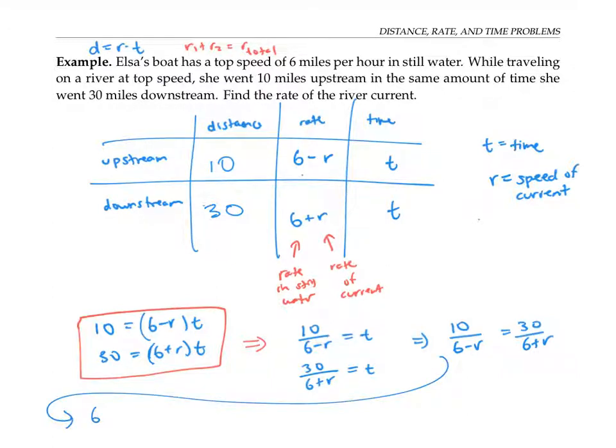Once I cancel things out, I get that six plus r times 10 is equal to 30 times six minus r. If I distribute, I'm going to get 60 plus 10r equals 180 minus 30r.